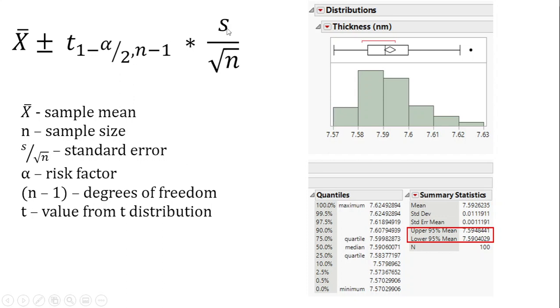So here s is the standard deviation and n is the sample size, and in this case the number of samples is 100. Alpha is a risk factor about which I will talk about in another video.